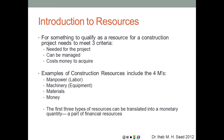For something to qualify as a resource for a construction project it must meet three criteria: first, it has to be needed for the project; second, it can be managed — sunshine, for example, cannot be managed so it's not a resource; third, it has to cost money to acquire. Air we breathe is free so it's not a resource, but compressed air produced by a compressor can be managed and costs money, so it qualifies.